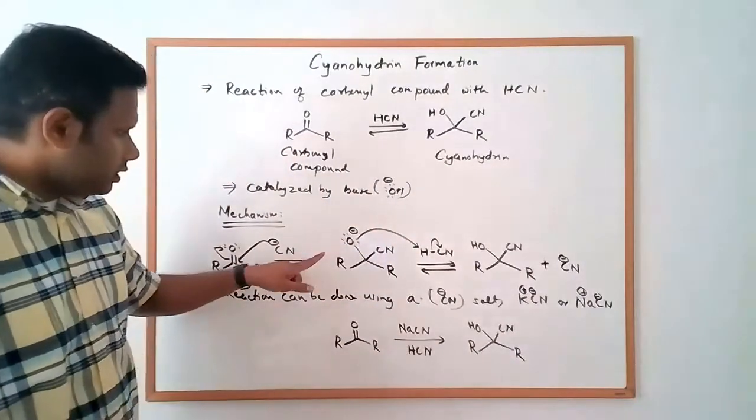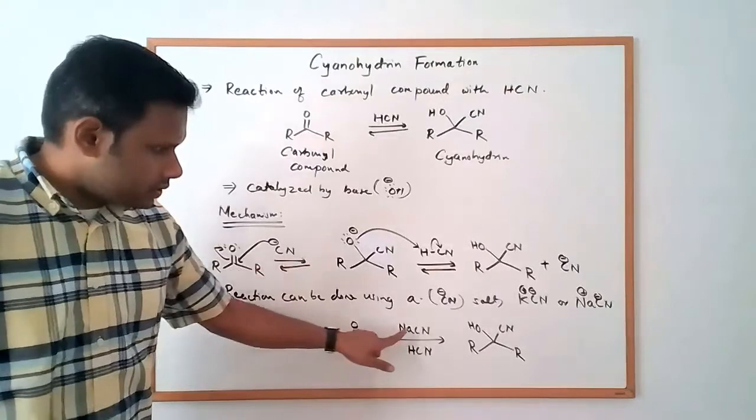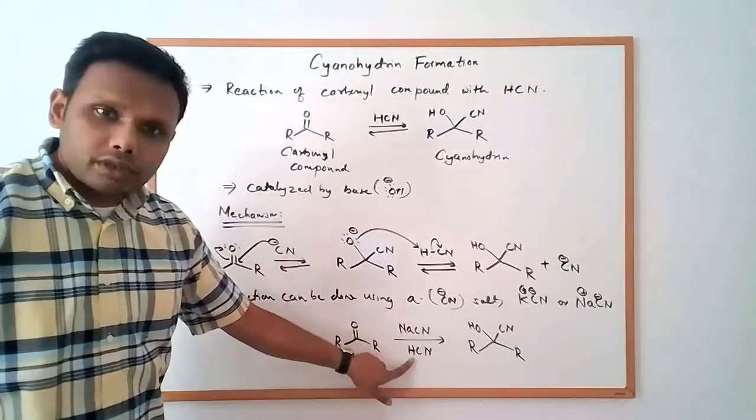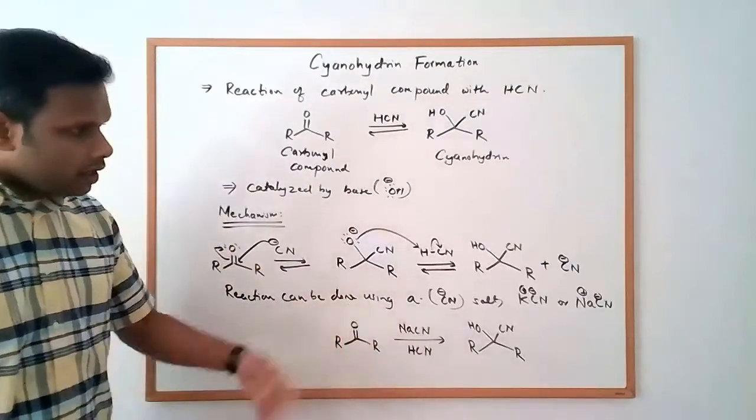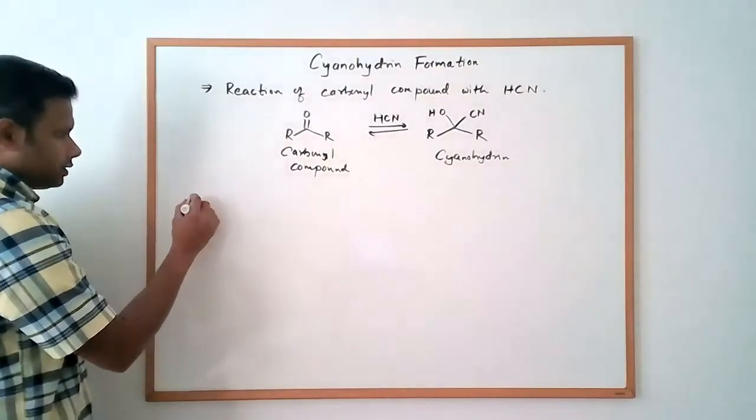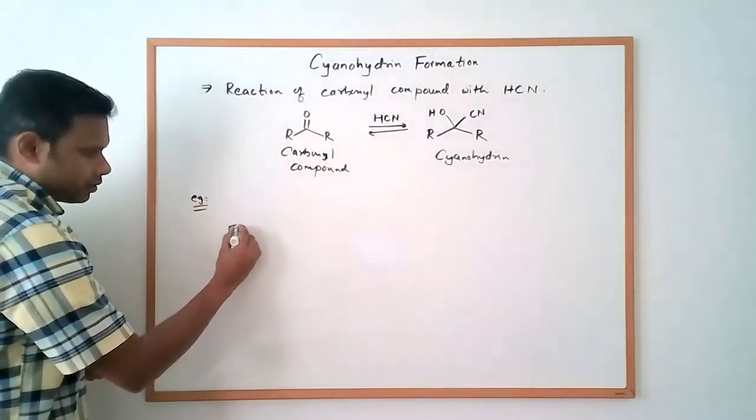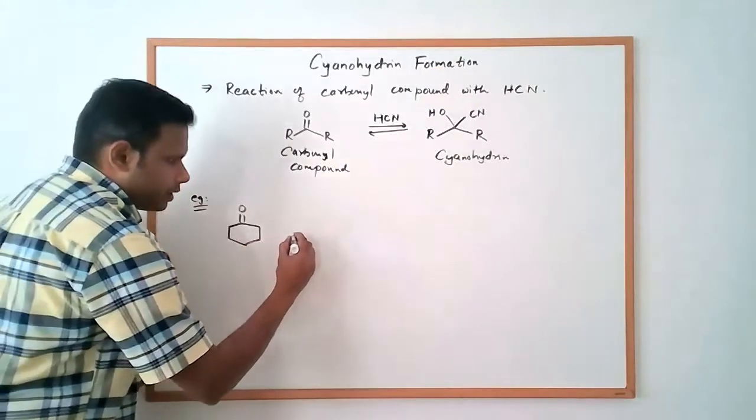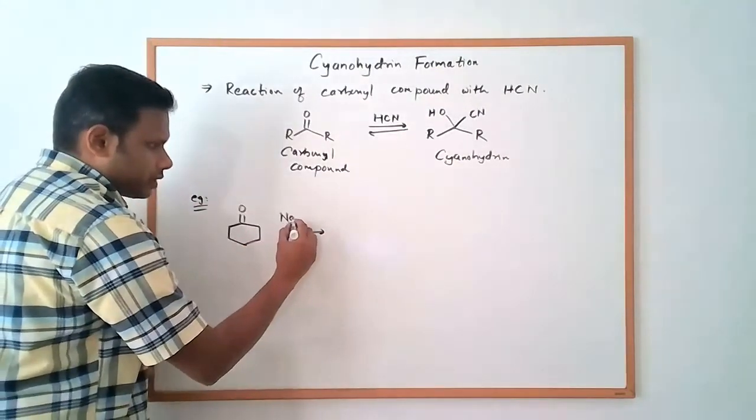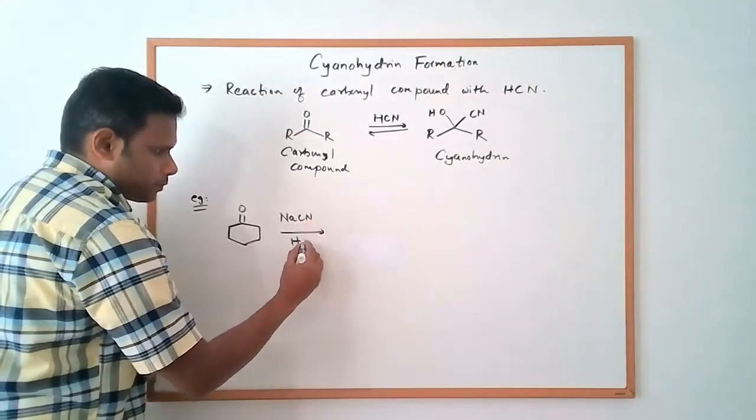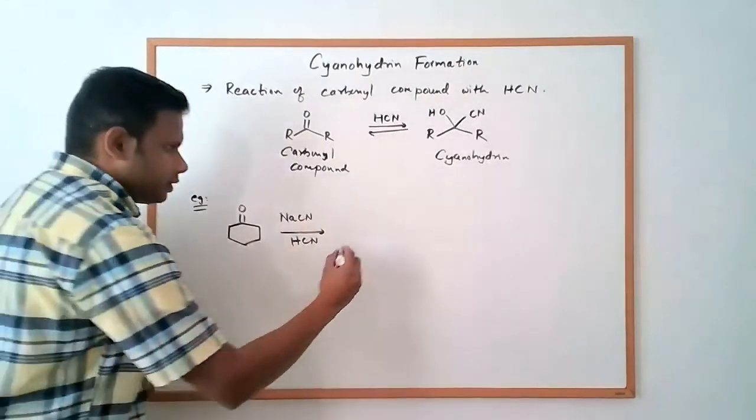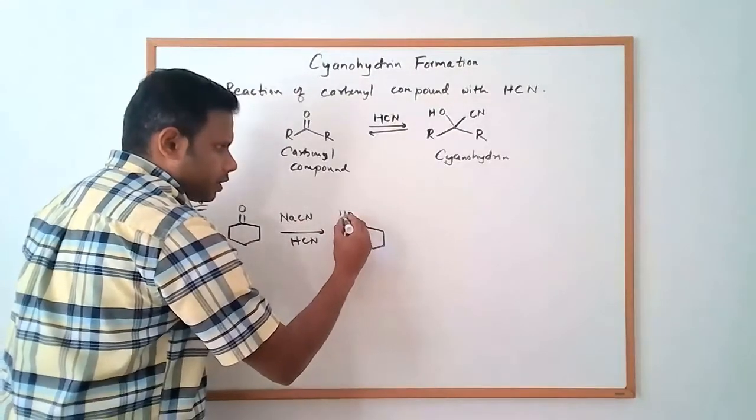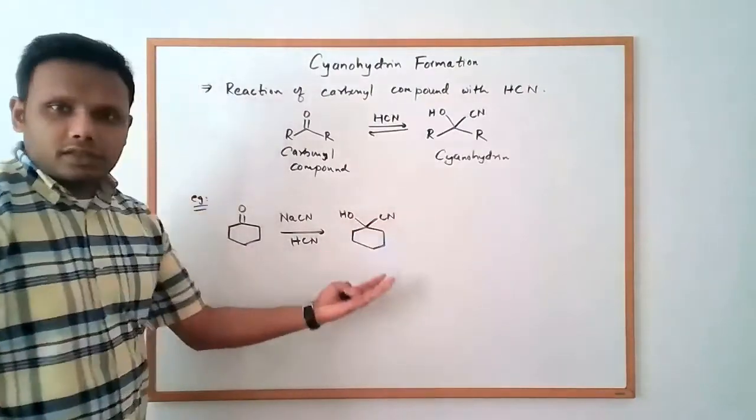And the mechanism, again, is going to be identical here, because the cyanide from here can go and attack the carbonyl, open it up, and then the oxygen would get protonated by the HCN to give us the cyanohydrin. So let's say we have cyclohexanone. If you react cyclohexanone with sodium cyanide in HCN as a solvent, that's going to give us the cyanohydrin. That's our product.